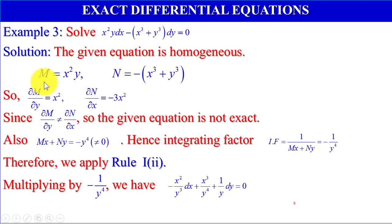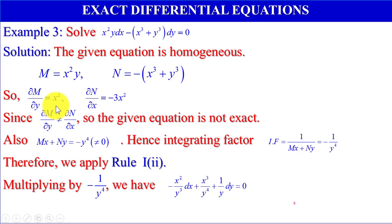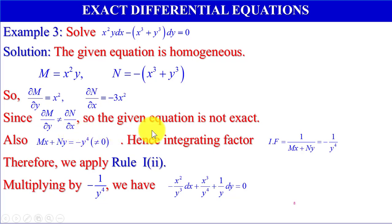Here M equals x squared y and N equals minus (x cubed plus y cubed). Differentiating M partially with respect to y gives del M by del y equals x squared. Similarly, del N by del x equals minus 3x squared. Since del M by del y is not equal to del N by del x, the given equation is not exact.